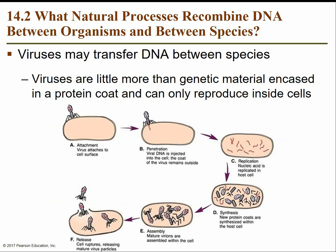Another natural mechanism for getting recombinant DNA is through virus transfer. Viruses are capable of transferring DNA between species. Viruses are in a gray area of biology — they don't meet all criteria to be considered living things, but they interact with organic material. Viruses are essentially genetic material encased in a protein coat. When not infecting a cell, they're inert — they have to interact with a living cell to reproduce.